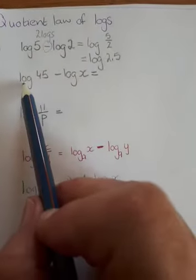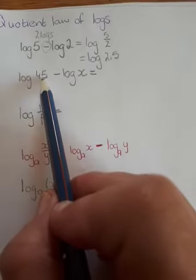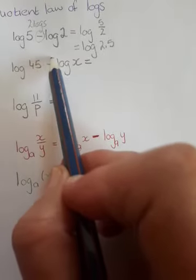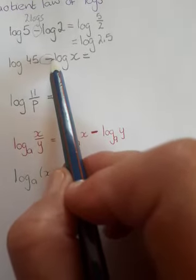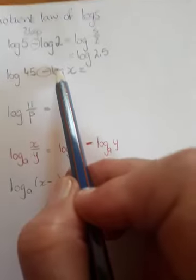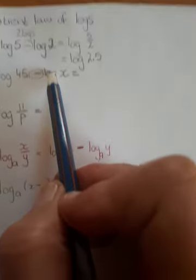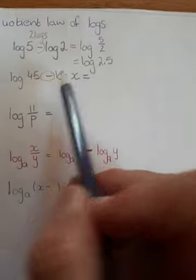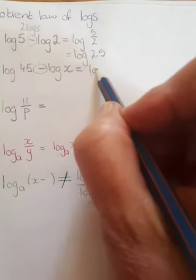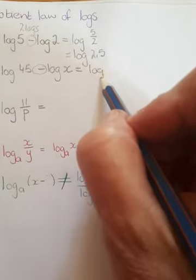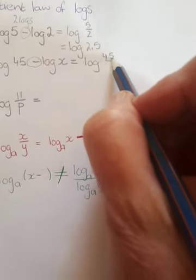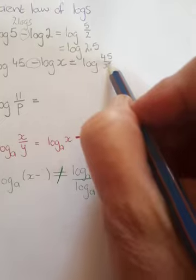Or if we have the log of 45 minus the log of x, we have the difference of two logs. Therefore, we can apply the quotient law, which means it is the log of 45 divided by x, which cannot be simplified any further.